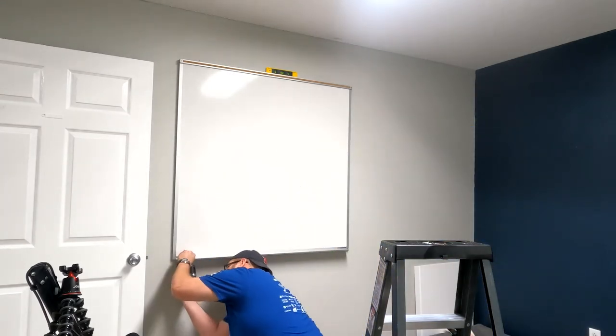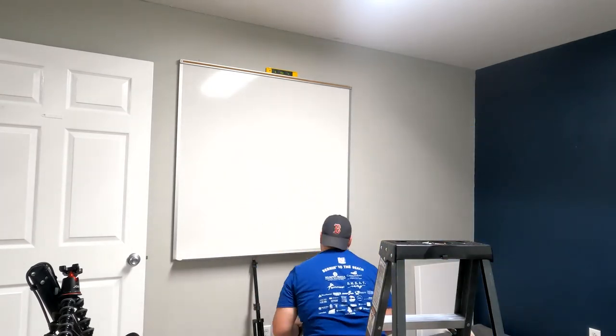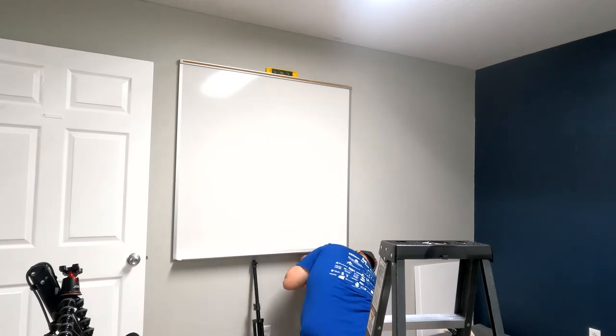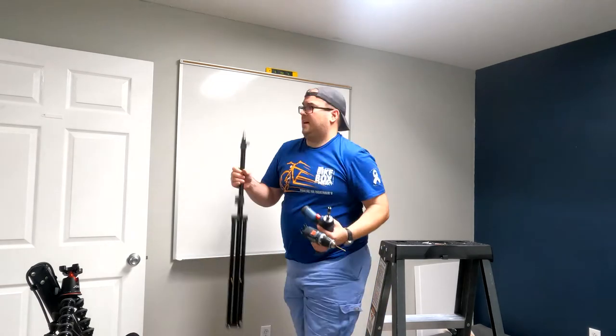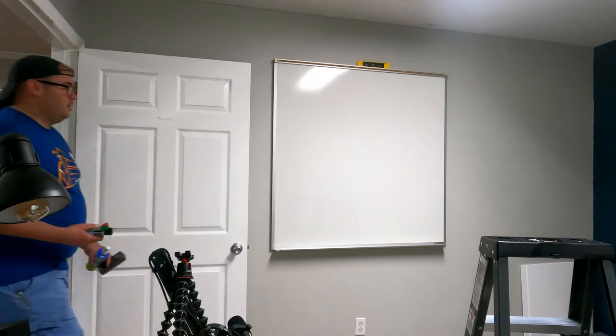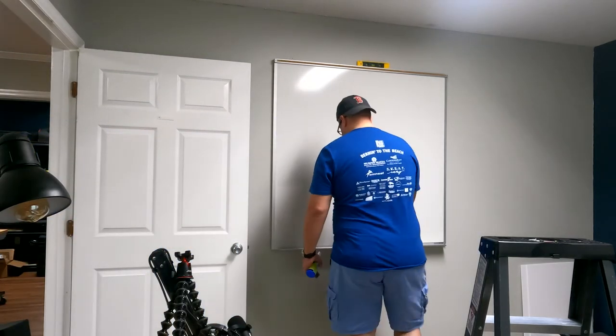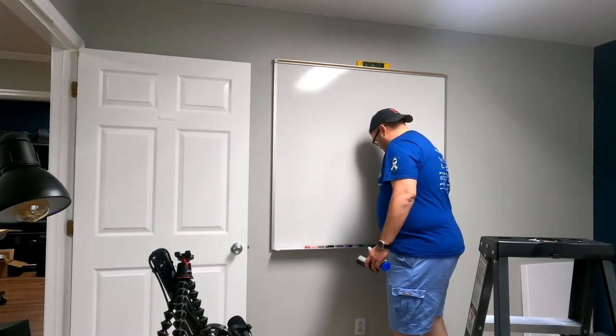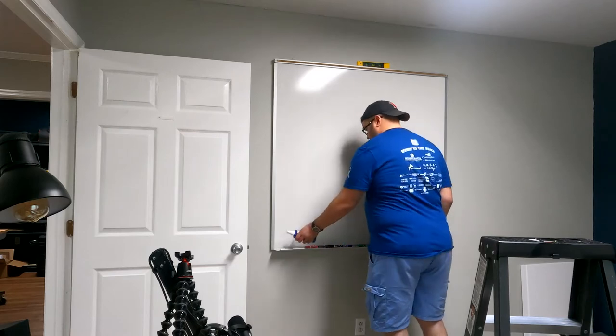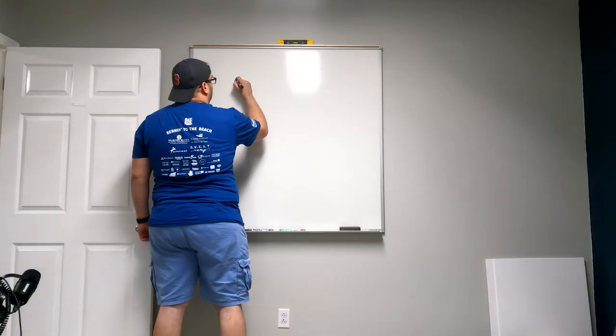So again, there's four screws that go into the four brackets into the wall. And then there's four screws that go from the bracket into the whiteboard. And there it is. It's all installed. So I'm just putting my markers back now, putting the eraser in. And that's pretty much it. It's pretty simple.